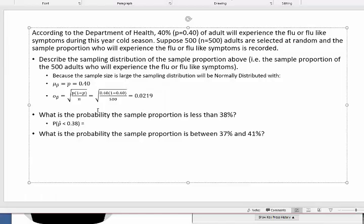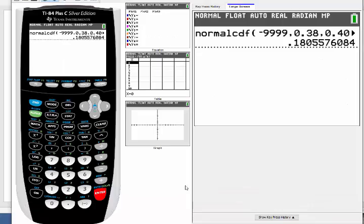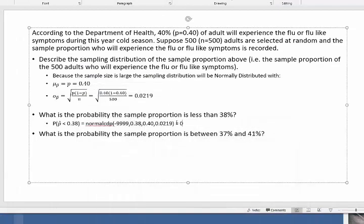And you should get 0.1806. So I'm just going to write this so you can see in the PowerPoint how I wrote this. So it's negative 9999, 0.38, 0.40, 0.0219. And that was equal to 0.1806 when I rounded. We got it.